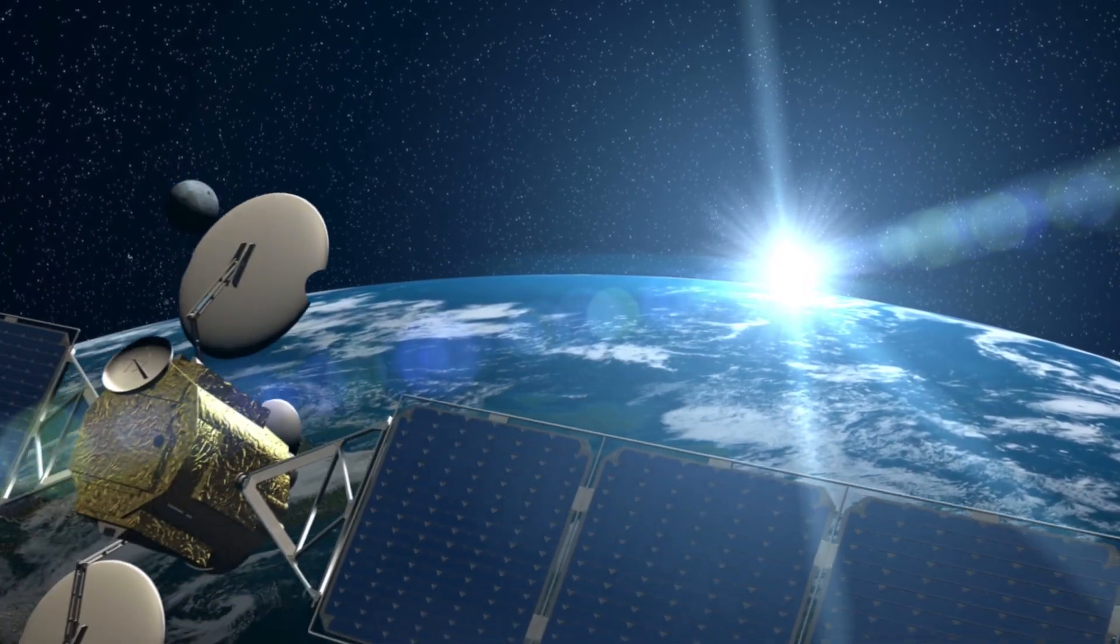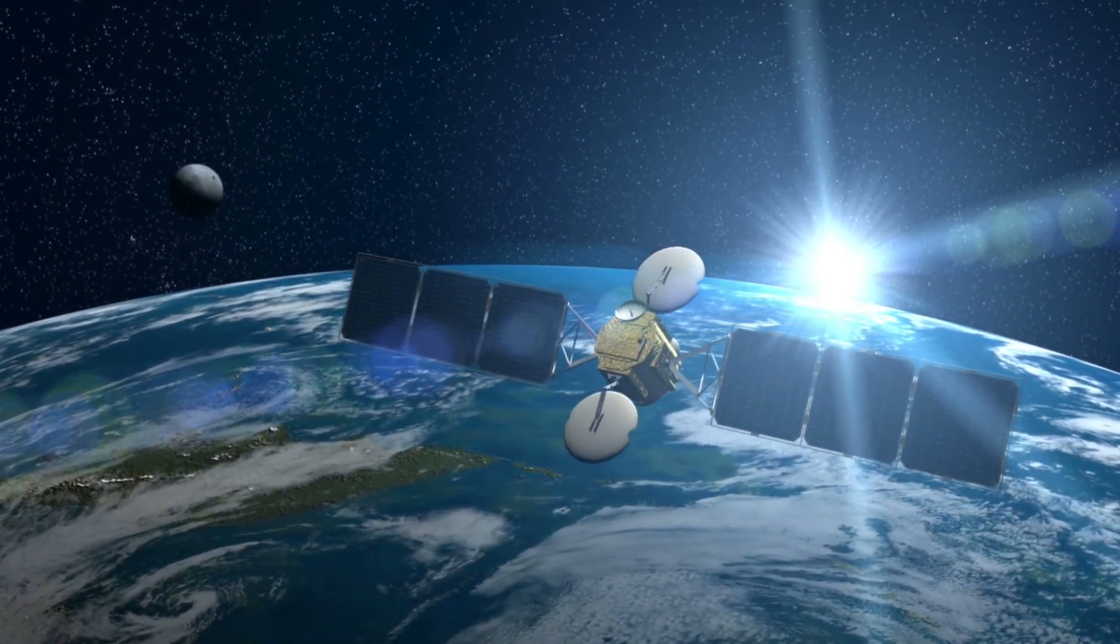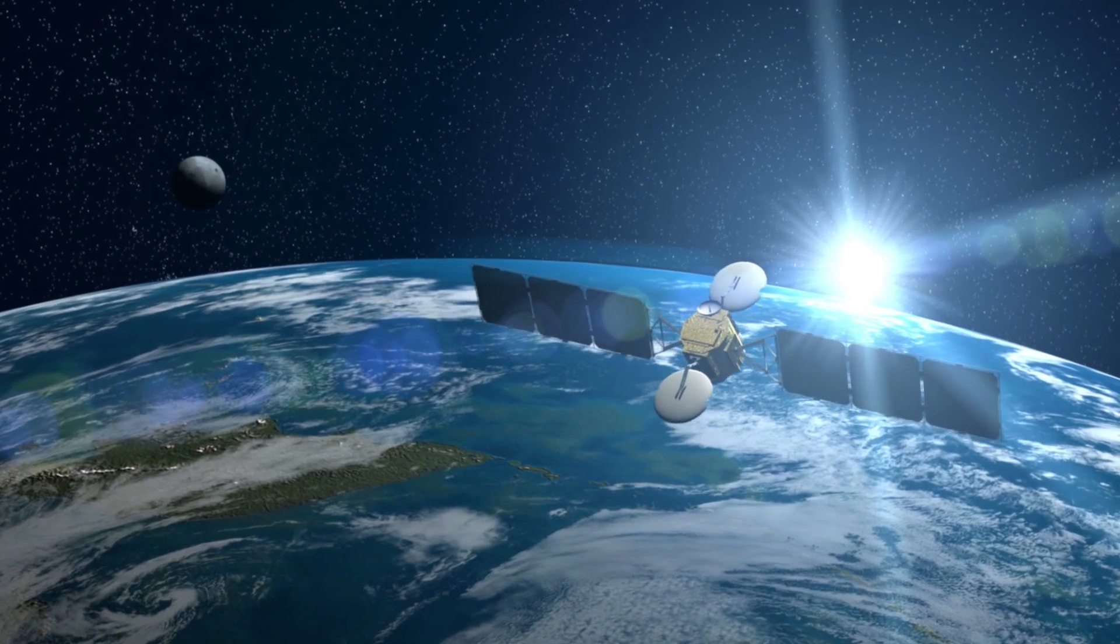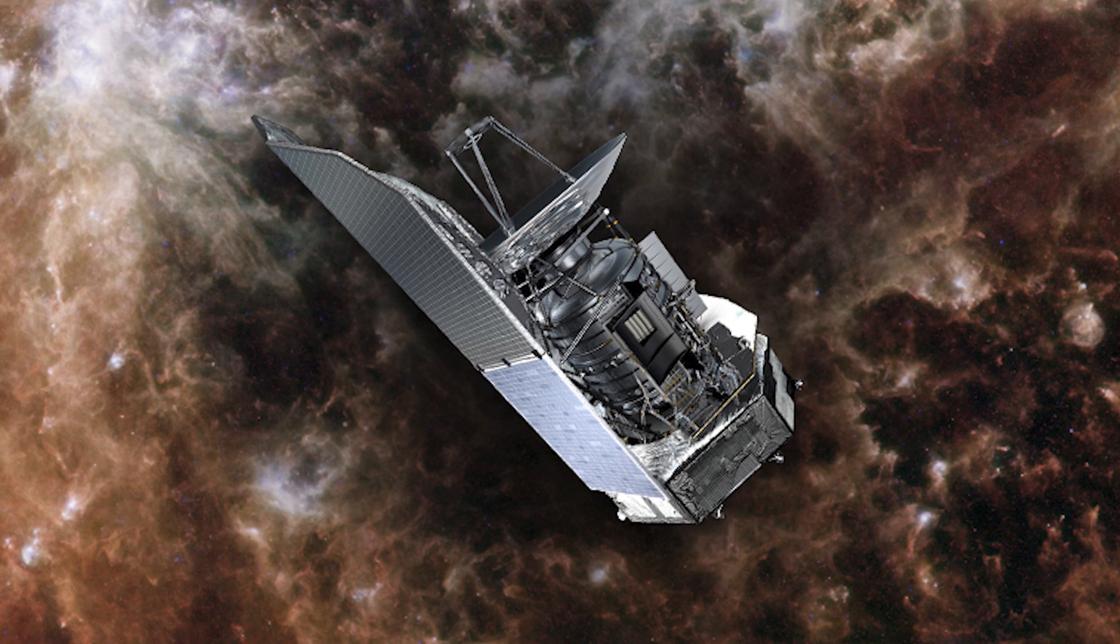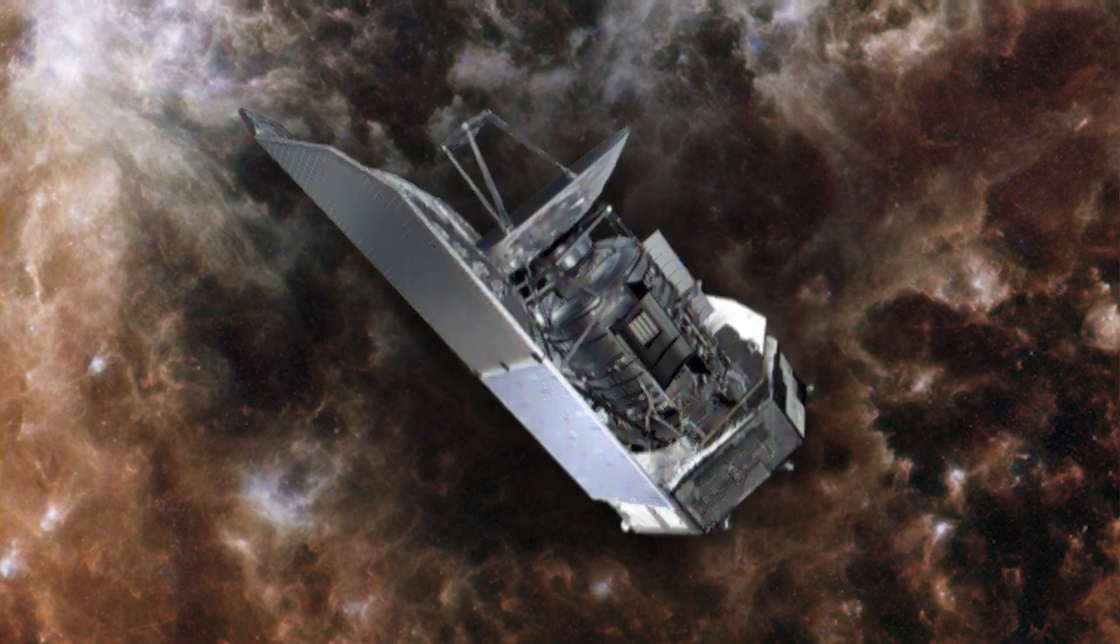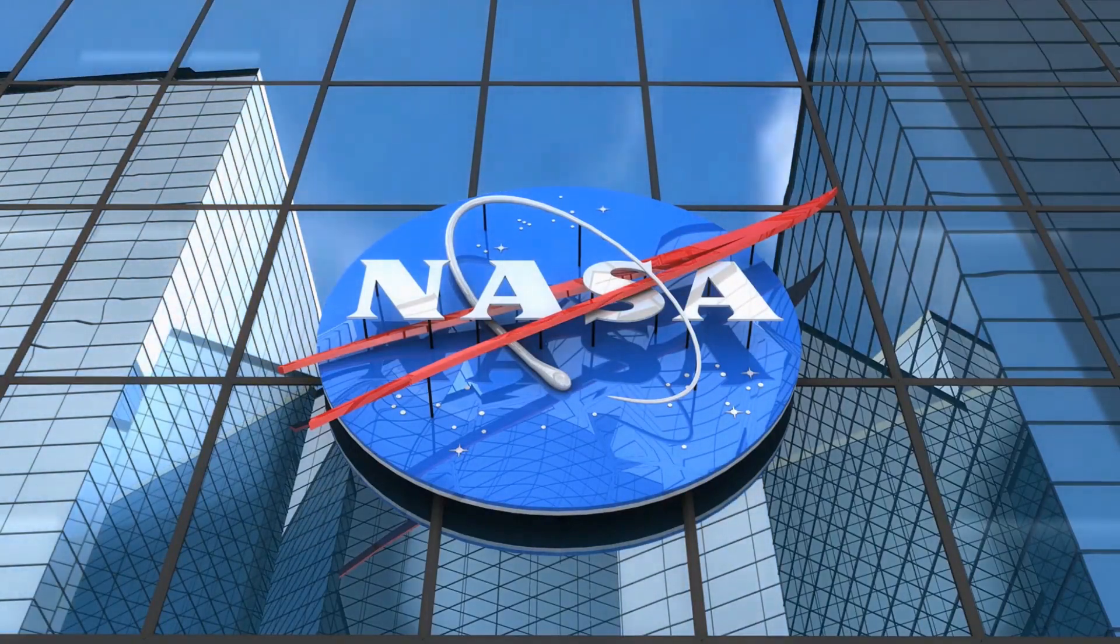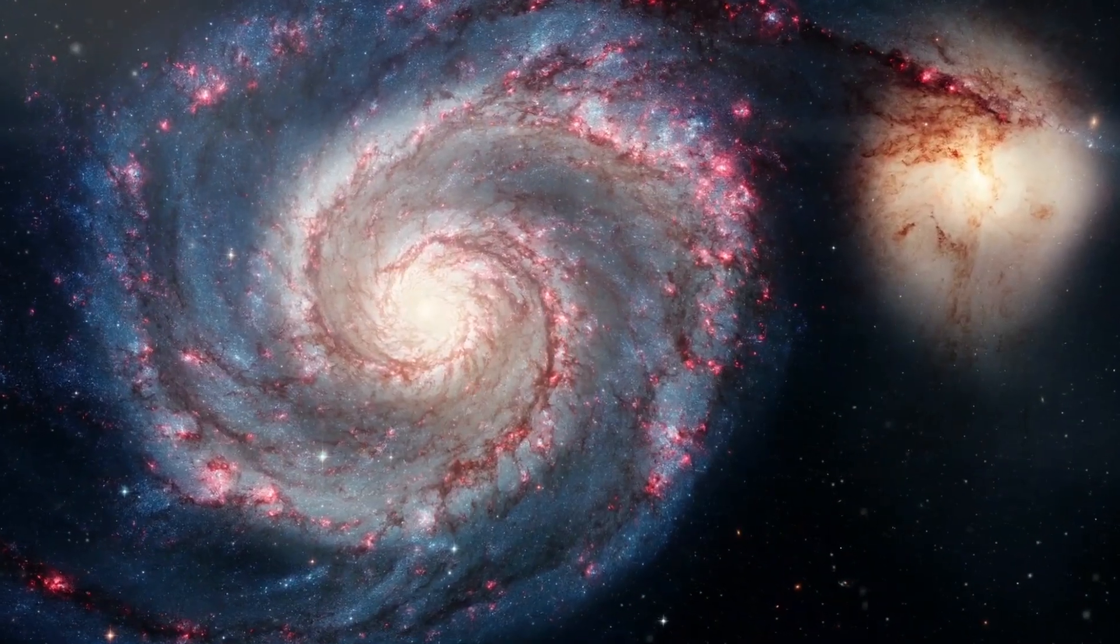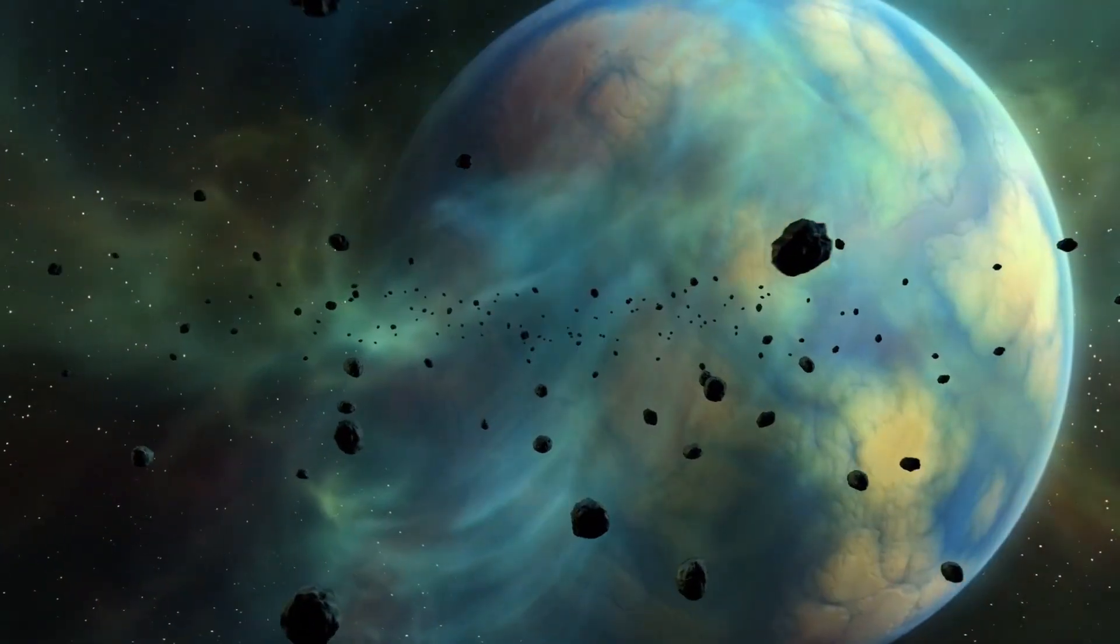L2 is a spot in space near Earth that lies opposite the Sun. This orbit will allow the telescope to stay in line with Earth as it orbits the Sun. It has been a popular spot for several other space telescopes, including the Herschel Space Telescope and the Planck Space Observatory. According to NASA, the James Webb Space Telescope will focus on four main areas: first light in the universe, assembly of galaxies in the early universe, the birth of stars in protoplanetary systems, and planets.